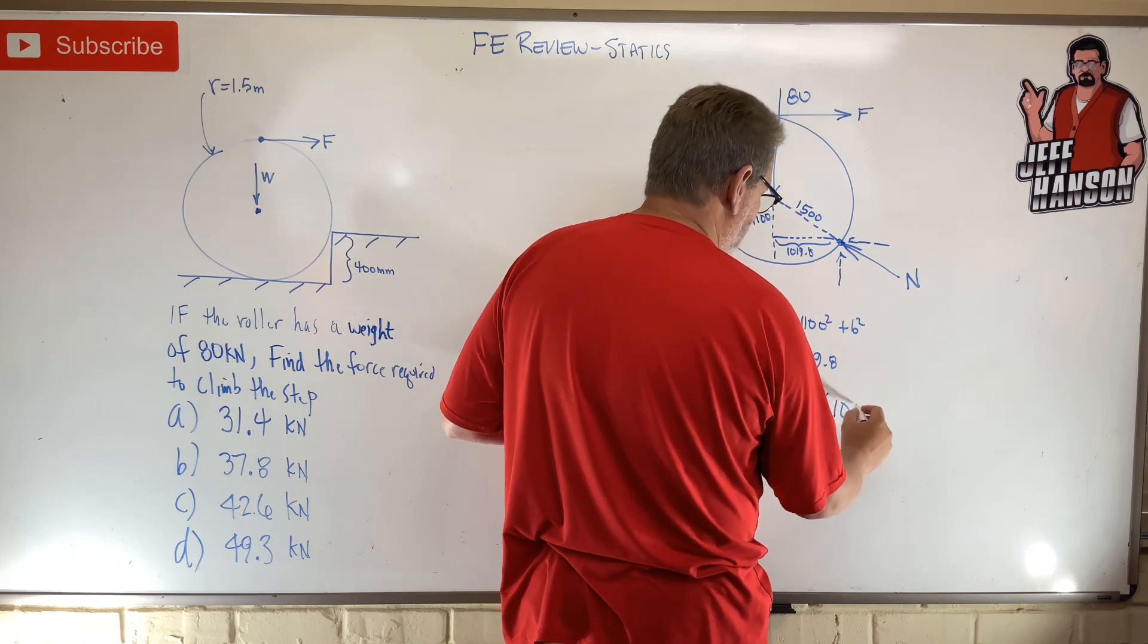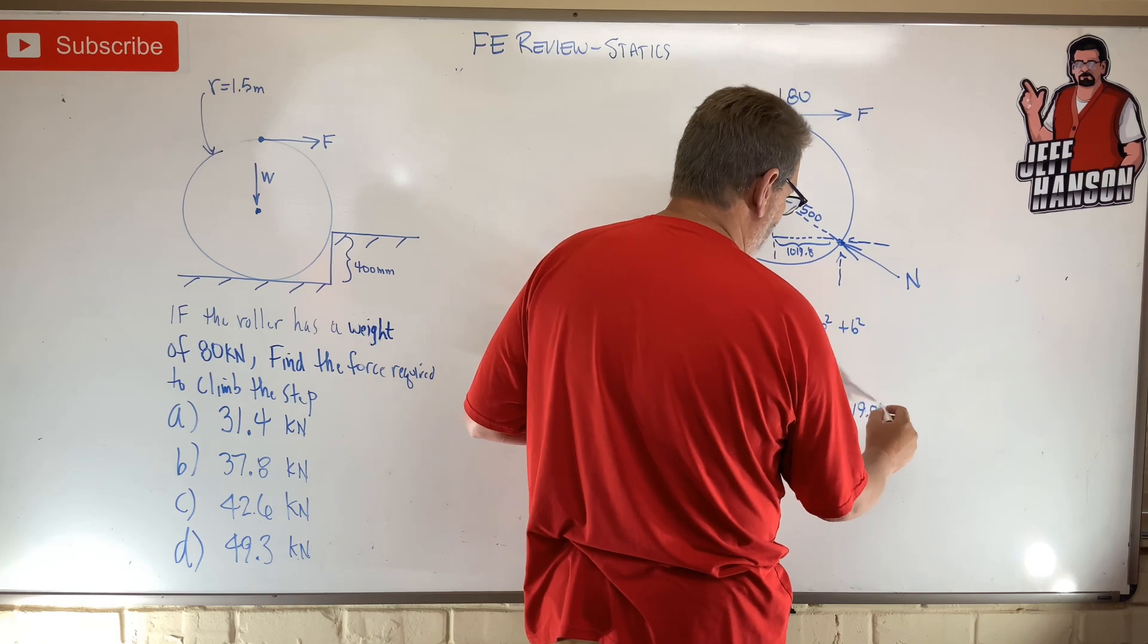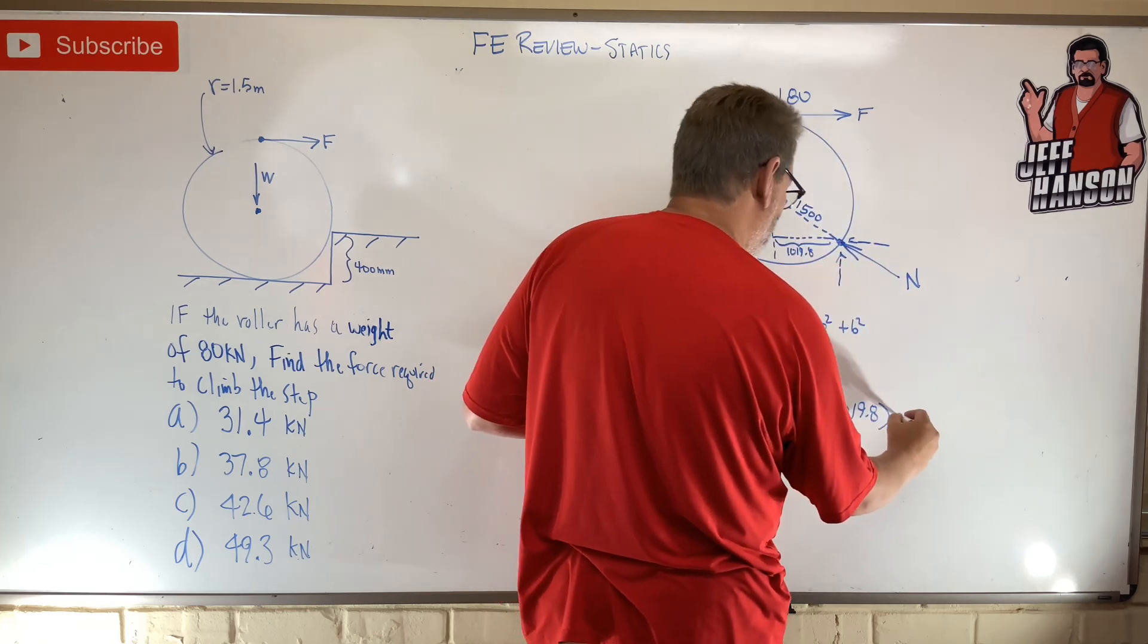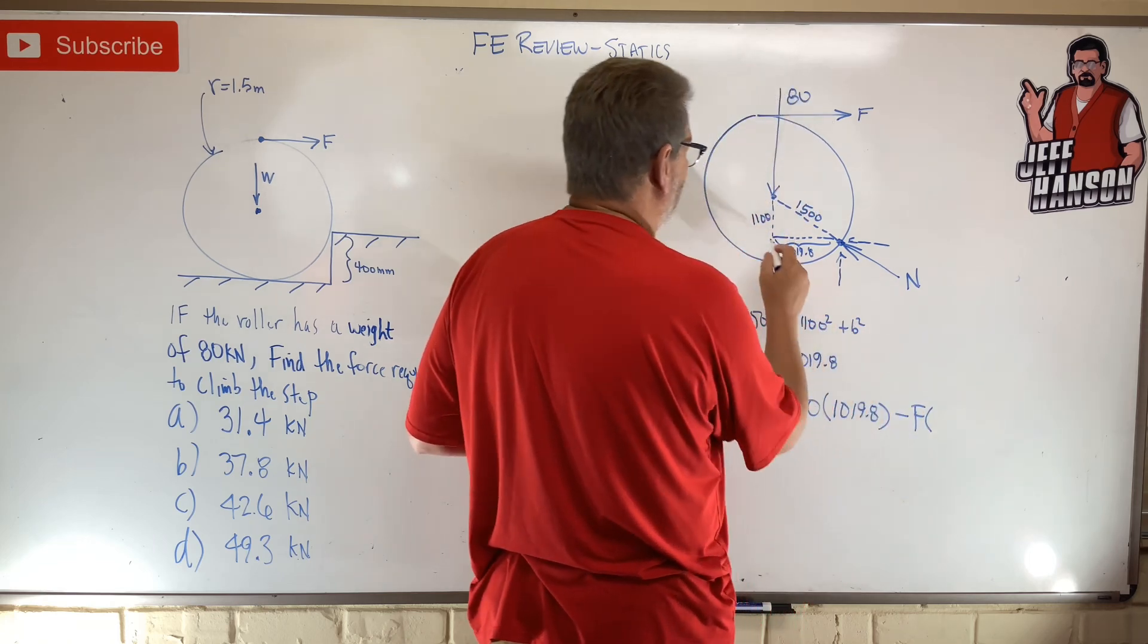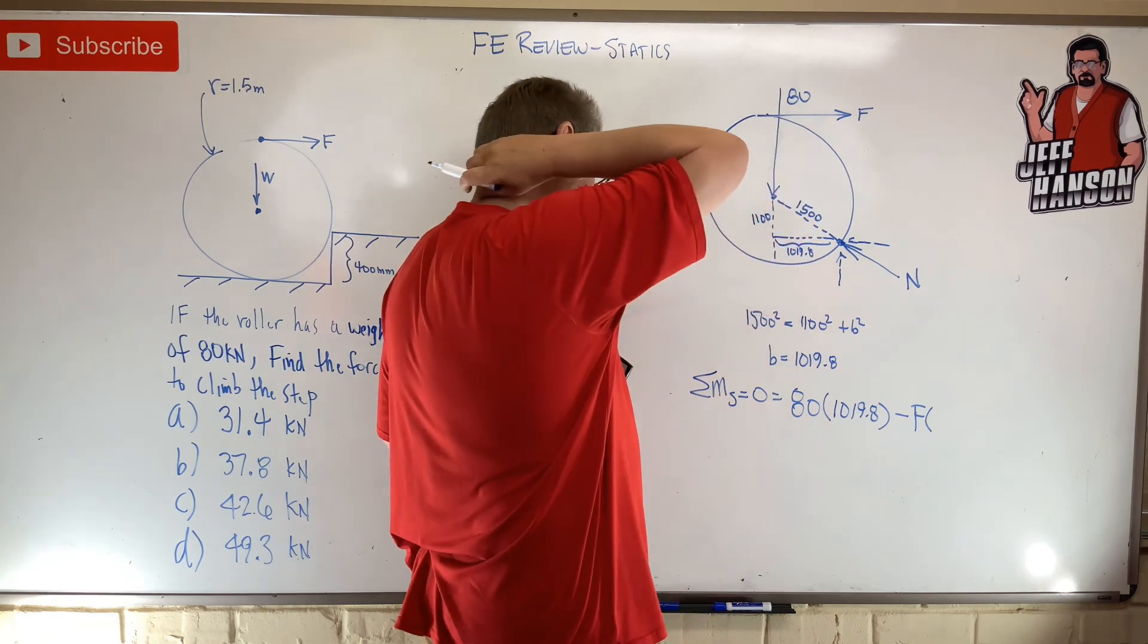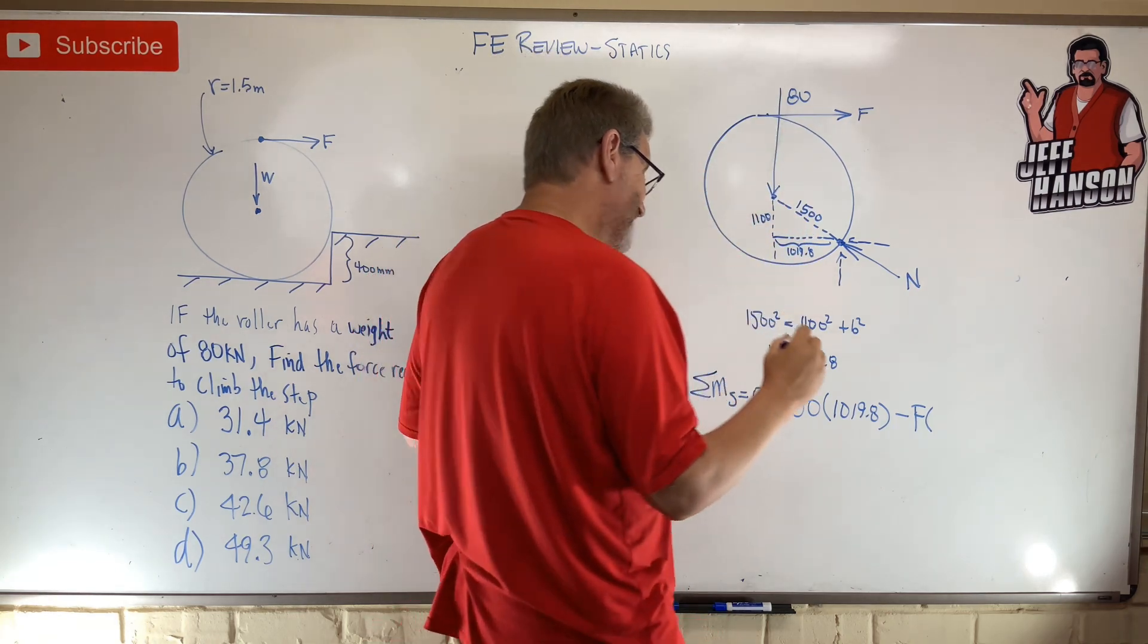And then I've got this F which rotates me negative, times how far away? 1100 plus another radius, so 1100 plus 1500, 2600.